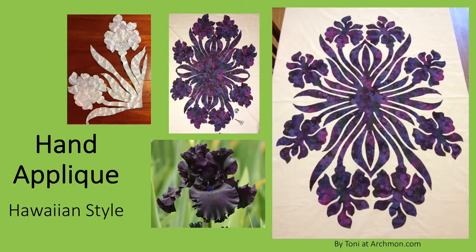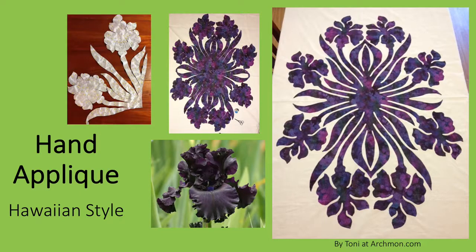Another special type of appliqué can be used to depict an iris: Hawaiian-style appliqué. For this, two fabrics are used — one to create the design, in this case an iris, and the other for the background. The design is created the way that, as children, those of us who grew up in snow country cut snowflakes out of paper by folding a sheet multiple times, cutting a design, and then opening out the paper. The purple fabric has been folded in half and then in half again, and the design cut and opened.